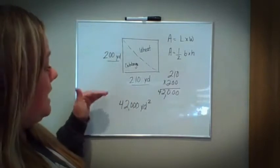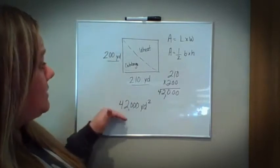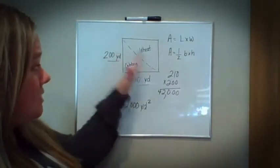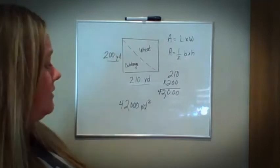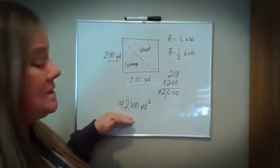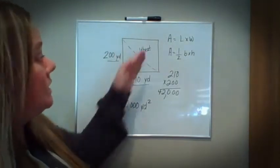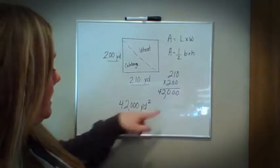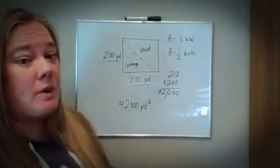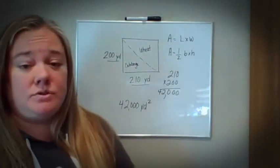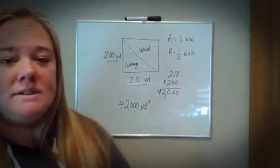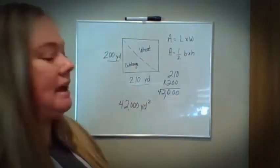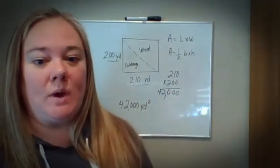If I wanted to find for cabbage, remember the triangle is half of it, so I would simply divide this in half. Or if I wanted to find for wheat, I would simply divide this in half. Either way, you can find for two triangles if you want — it's an extra step — or you can simply use length times width.